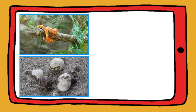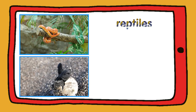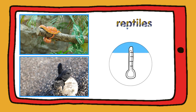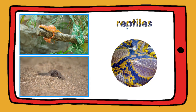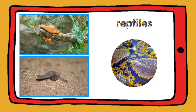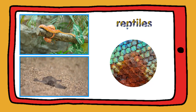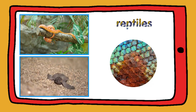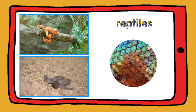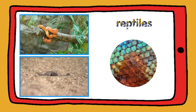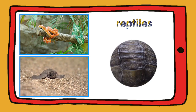Turtles and snakes are reptiles. They've got cold blood, dry skin and scales. Some reptiles, like turtles, have got a shell.